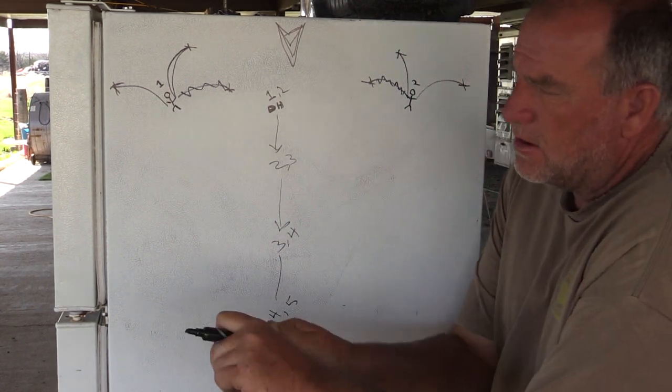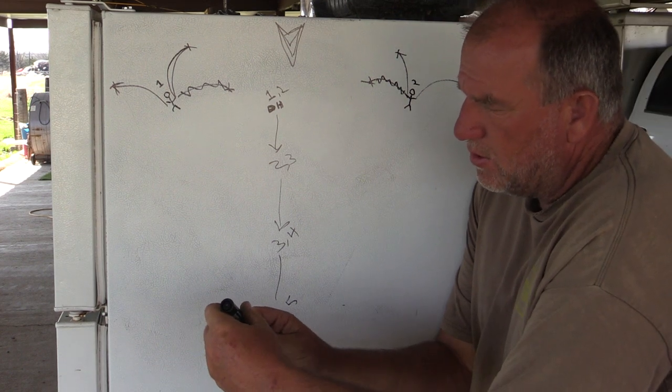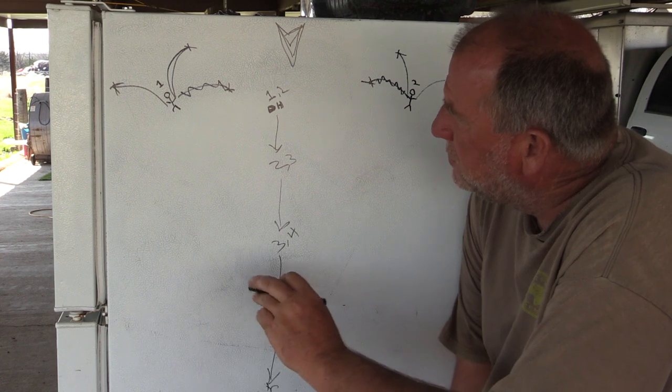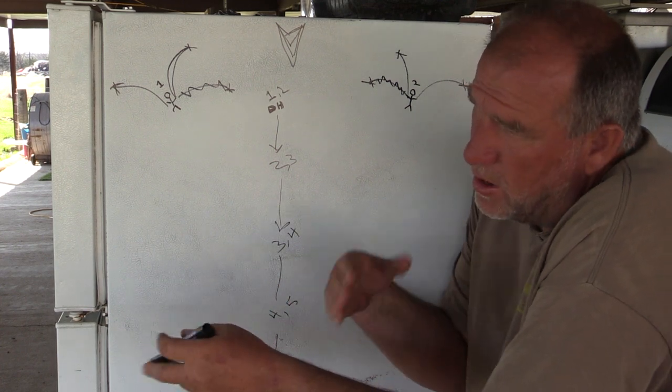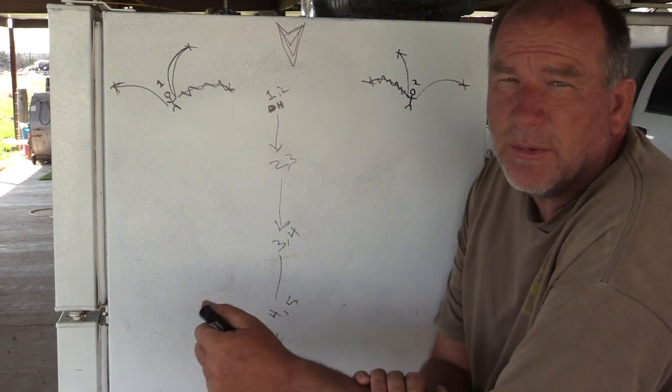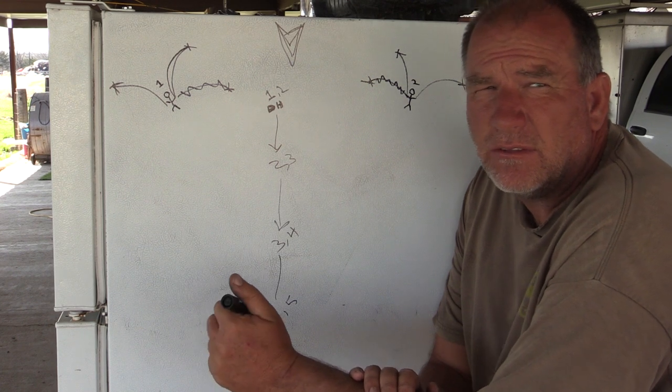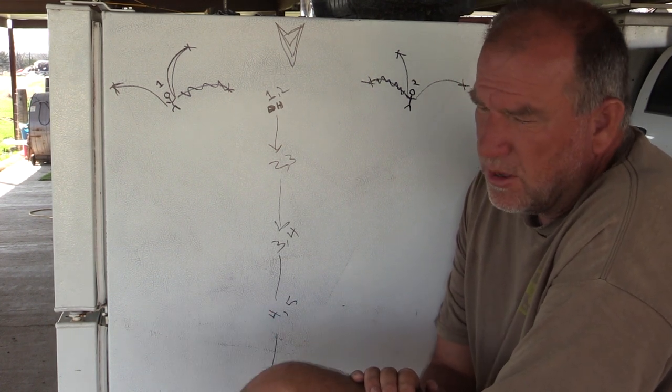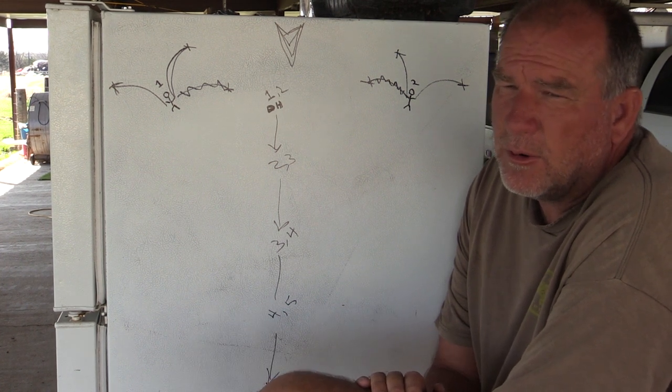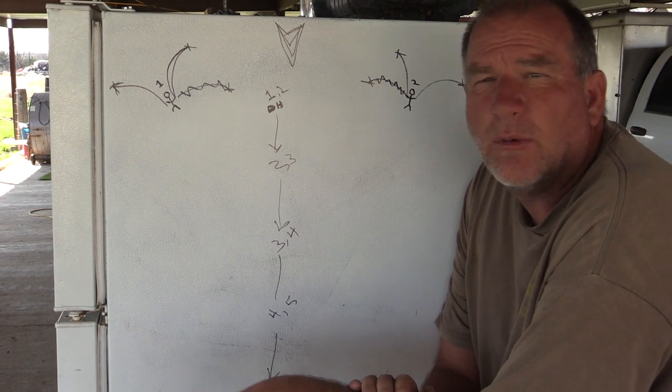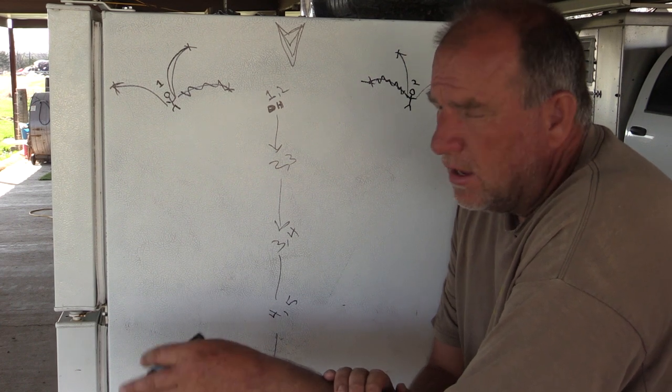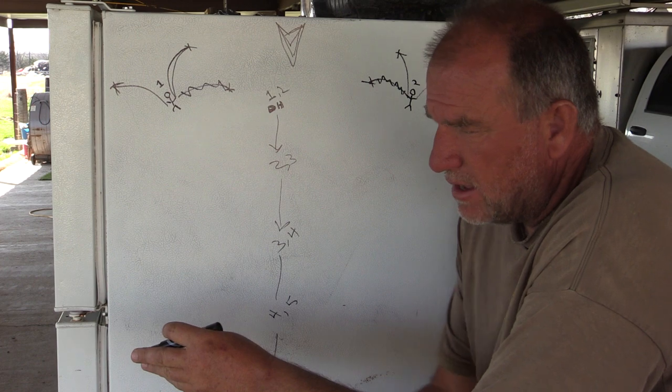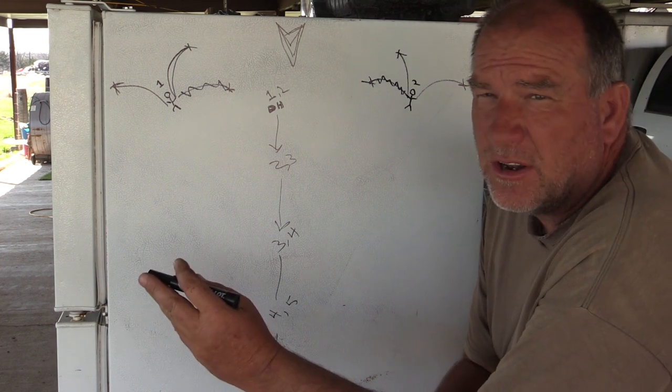Another thing that you can do is you can start doing what's called a bird in the mouth procedure. Once you get your dogs running with singles, and you're going to see me doing this with Trinity here just in the very next few days. On a single, when she comes in, instead of me taking that bird from her right then, I'm going to line her up, and I'm going to tell her mark, and I'm going to have my thrower shoot and throw, and I'm going to take the bumper from her, and then I'm going to send her.